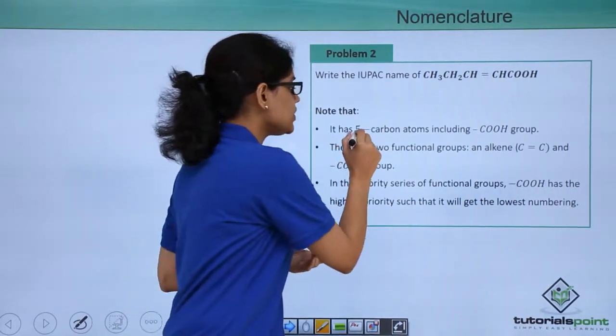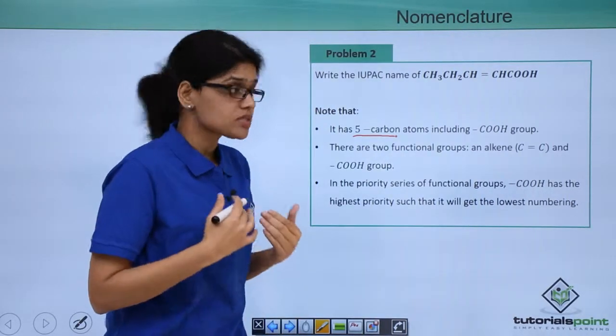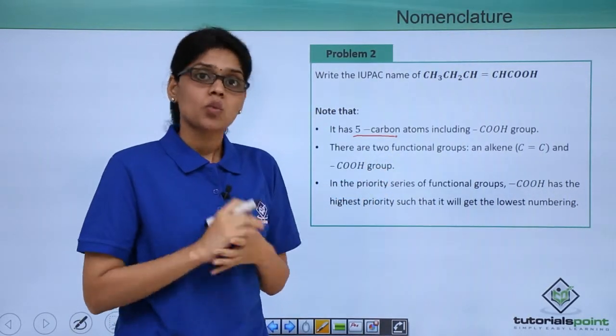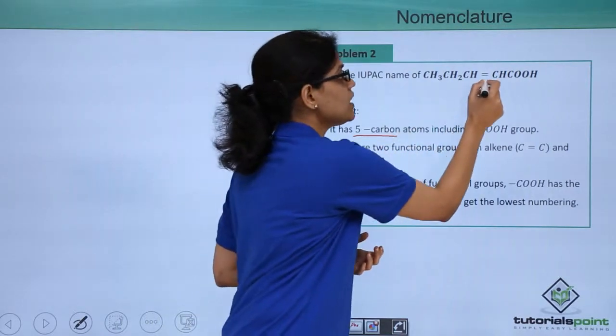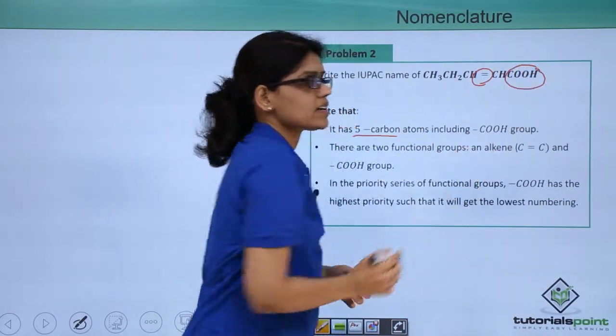Based on that, here we have 5 carbon atoms including COOH group. We can also see that there are 2 functional groups. What are the 2 functional groups? We have an alkene functional group here and we have a carboxylic acid functional group.